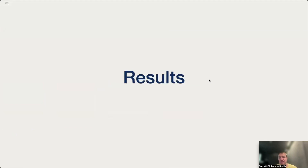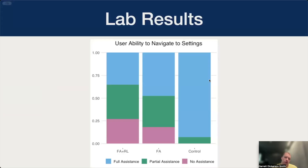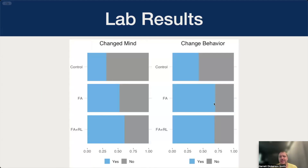Now, I'd like to highlight just a few of our findings. For a more comprehensive picture of our results, please take a look at our full paper. First, after participants watched the video, they were asked to navigate to Facebook's advertising controls. Both the fear appeal, shown in the graph as FA, and the fear appeal plus reflective learning condition did increase users' self-efficacy, as the majority of participants not in the control condition were able to navigate to the page with either no or partial assistance. For the control condition, all participants needed some assistance in finding these settings. Secondly, in the lab session, we detected a significant difference in the attitudes of participants after watching the video. Both the fear appeal and the fear appeal with reflective learning were more likely to change the user's mind about something, and users were more likely to indicate that they intended to change their behavior after watching the video.